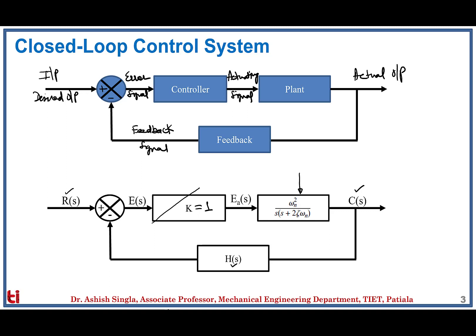Now, why do we need a controller? Because we are not satisfied with the performance of the system alone — we need to modify, change, and enhance the performance of the system. That's why we need a controller, which is not unity here. We will see different types of K depending upon the choice of controller. E(s) is called the error signal, written as R(s) minus C(s), and E_a(s), the output from the controller, is called the actuating signal.